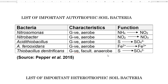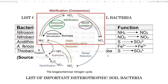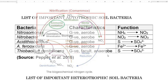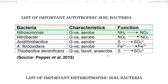The first two groups, that is Nitrosomonas and Nitrobacter, are playing a role in the nitrogen cycle. Mainly, Nitrosomonas is involved in the conversion of ammonia to nitrite, and Nitrobacter is involved in converting nitrite to nitrate.